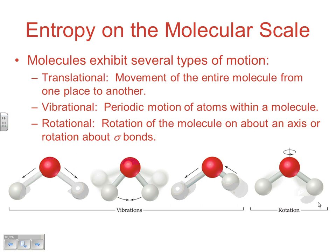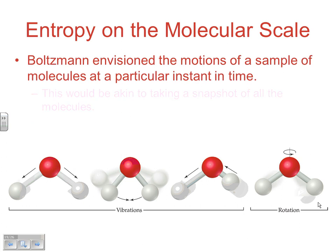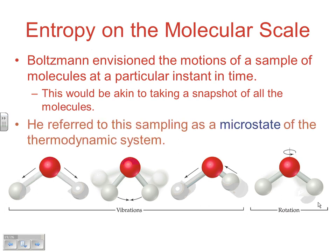All three of these are different types of motions that atoms can exhibit. Normally, when we think of motion, we pretty much think of translational motion. But vibrational and rotational are also types of motion that molecules exhibit. And Boltzmann envisioned the motions of a sample of molecules at a particular instant in time. He basically said this would be akin to taking a snapshot of all the molecules to look and see what they're actually doing at any given point in time. He referred to this sampling as a microstate of the thermodynamic system.